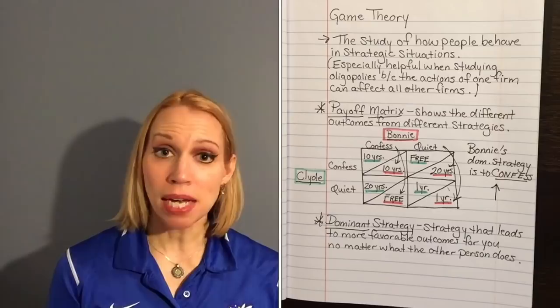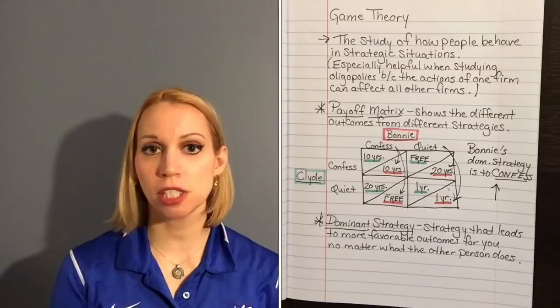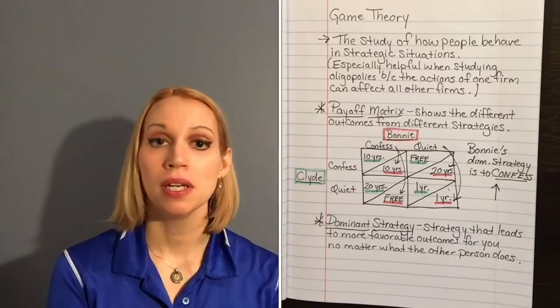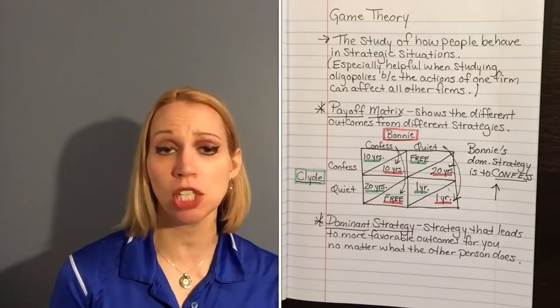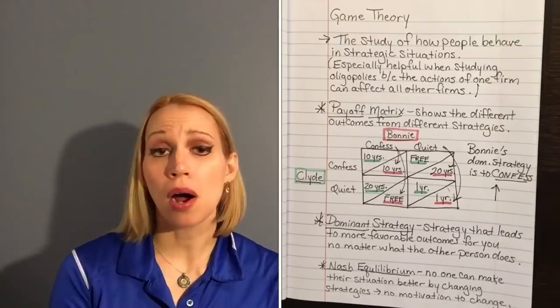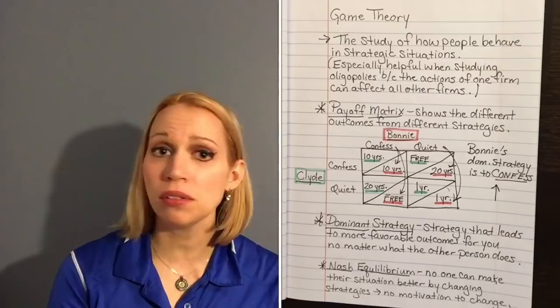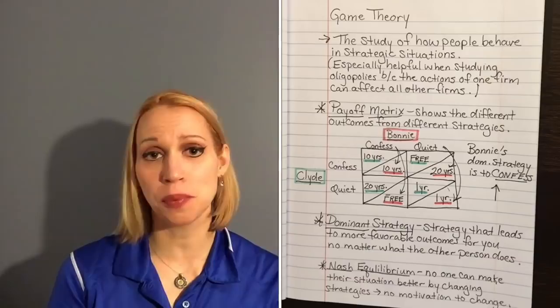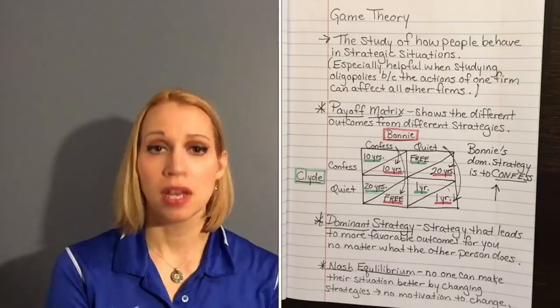Sometimes when you work these problems, people will have dominant strategies. Sometimes they may not have a clear dominant strategy, and that's okay. Now there's one last thing about oligopolies and game theory we need to talk about: the Nash equilibrium. The Nash equilibrium is basically a situation where people are doing the best they can and changing their strategy will not benefit them — they're already in the best strategy available.